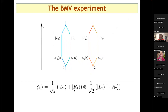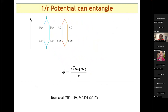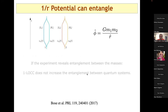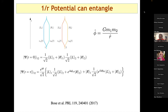The two masses start in a completely uncorrelated product state — a superposition of mass one going into different trajectories and mass two going into different trajectories. The interaction they consider is just a Newtonian one. The Newtonian potential gets the two masses entangled, and one can compute the final state, which is not separable.